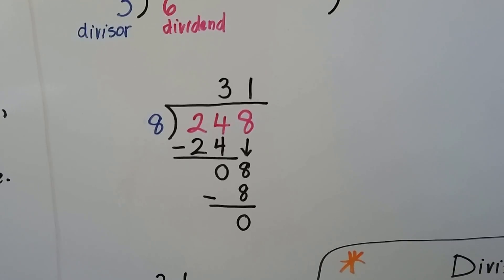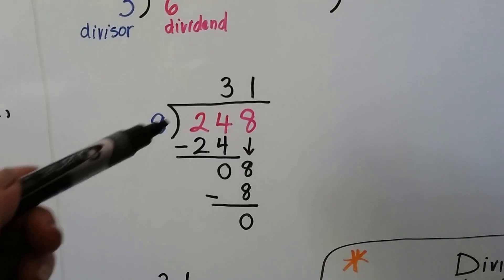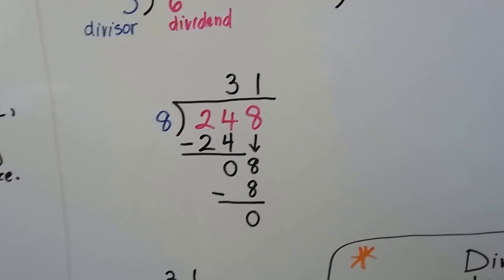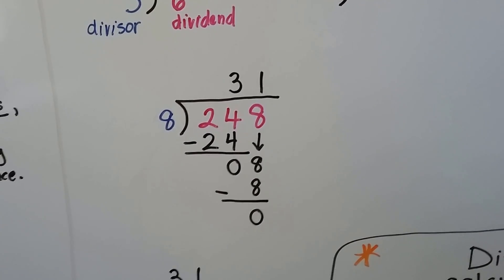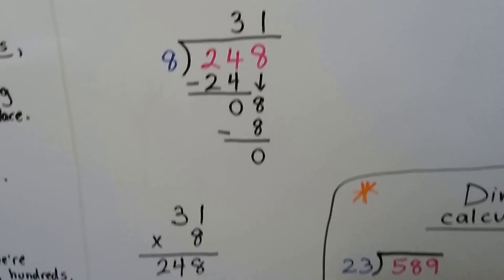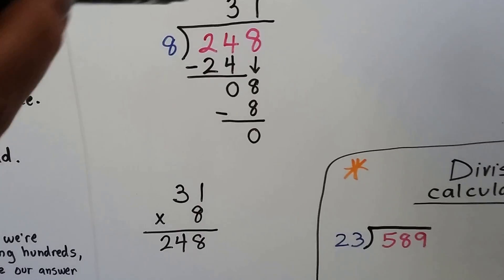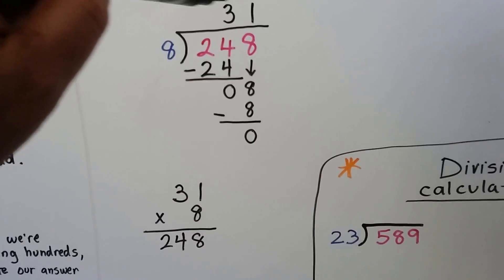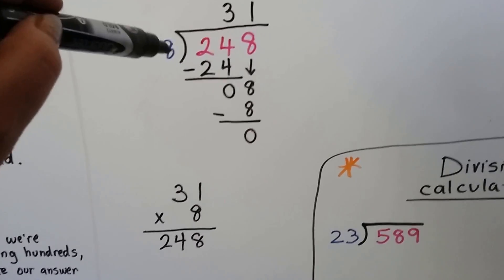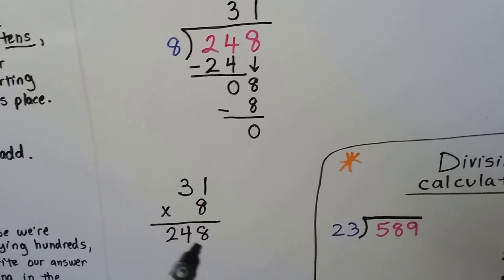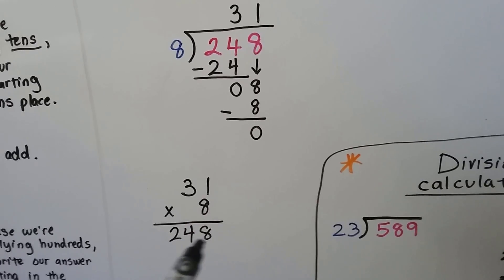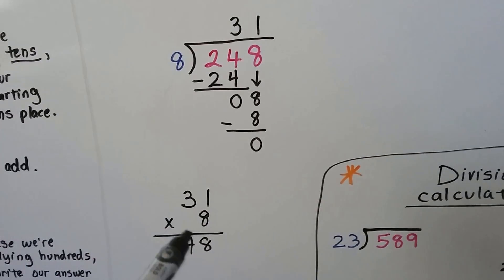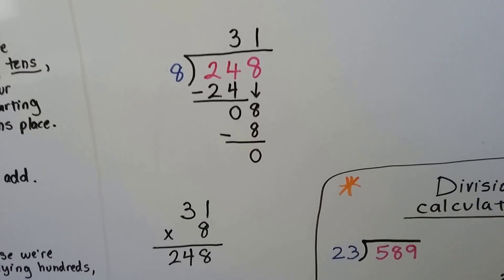Our answer is 31 — so 8 can fit into 248 thirty-one times. We can verify this: the quotient times the divisor — 31 times 8 — should equal the dividend 248, and it does, so we know we did it right.